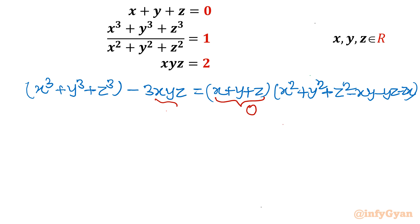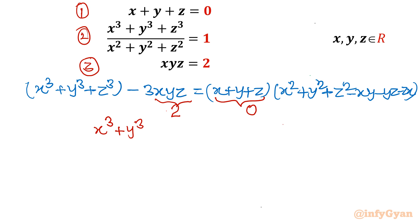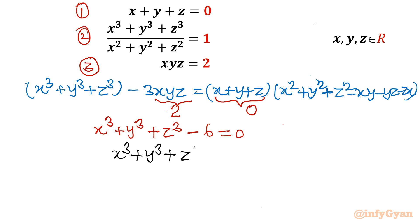From equation 3, xyz equals 2. The right-hand side becomes 0 because x plus y plus z equals 0. So we get x³ plus y³ plus z³ minus 3 times 2 equals 0, that is x³ plus y³ plus z³ minus 6 equals 0. Moving minus 6 to the right-hand side gives us x³ plus y³ plus z³ equals 6.